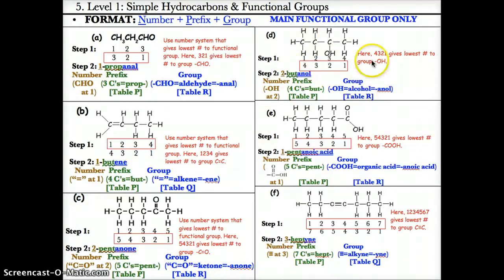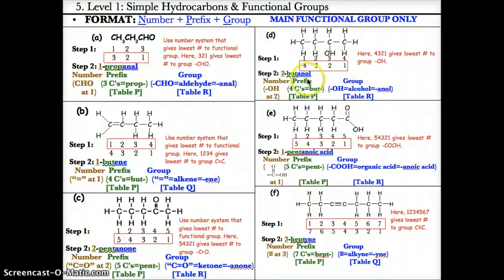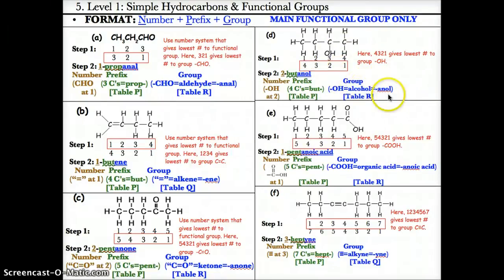Example D: a structure with an OH group. Step one: number the carbons forward 1, 2, 3, 4 and backwards 4, 3, 2, 1. Step two: the functional group is OH. The lowest location is 2 because 2 is less than 3, so use the backwards system 4, 3, 2, 1. The prefix is but- because there are 4 carbons; the group ending is -anol because OH is an alcohol, which has the ending -anol based on table R. The name is 2-butanol.